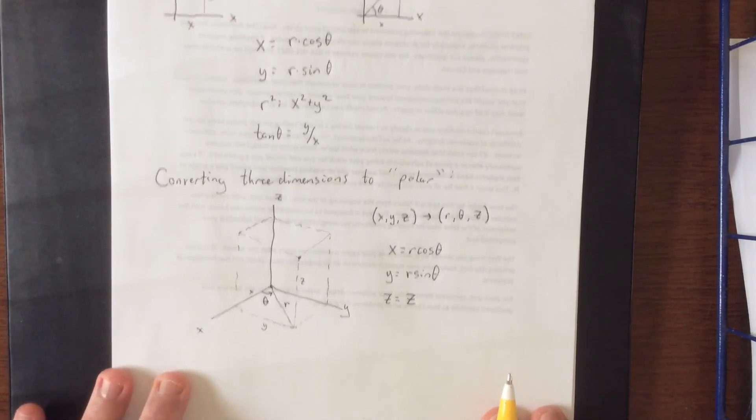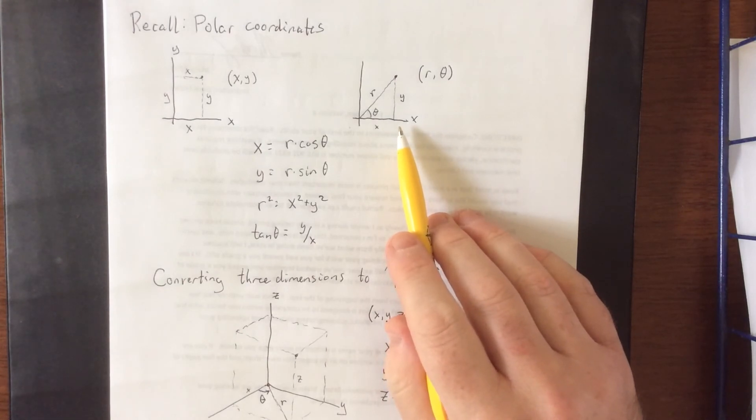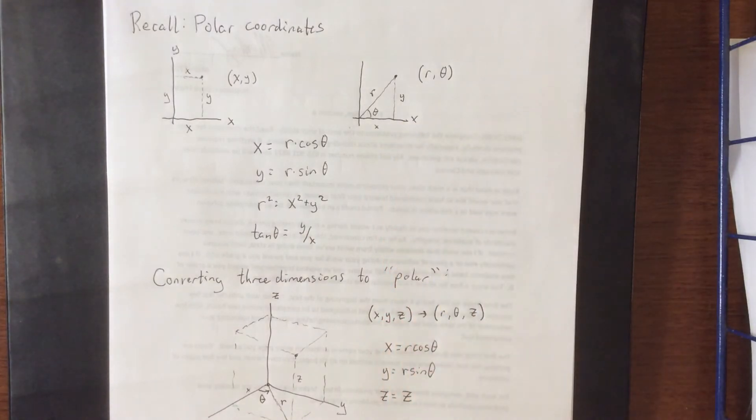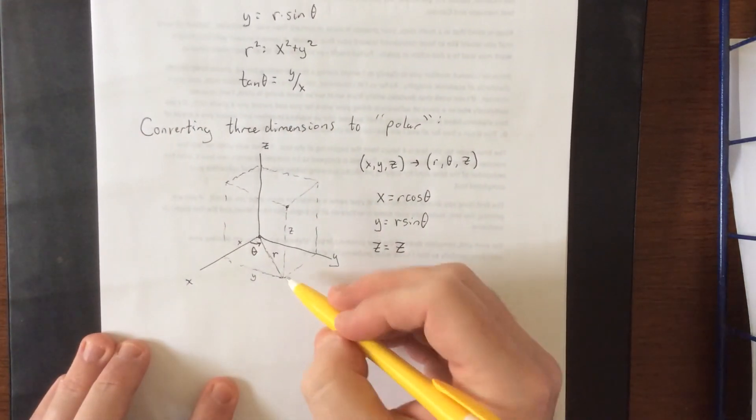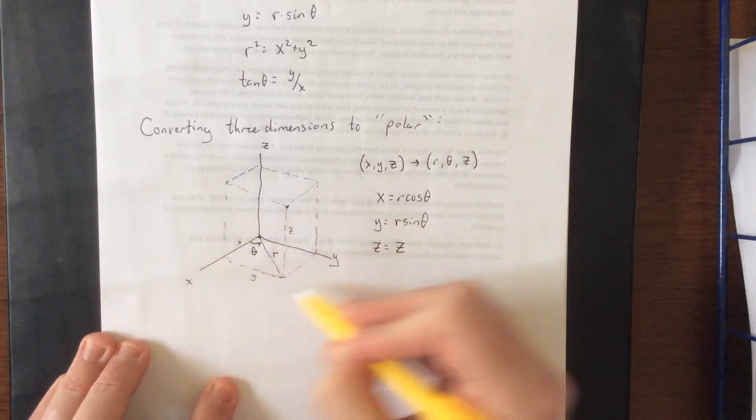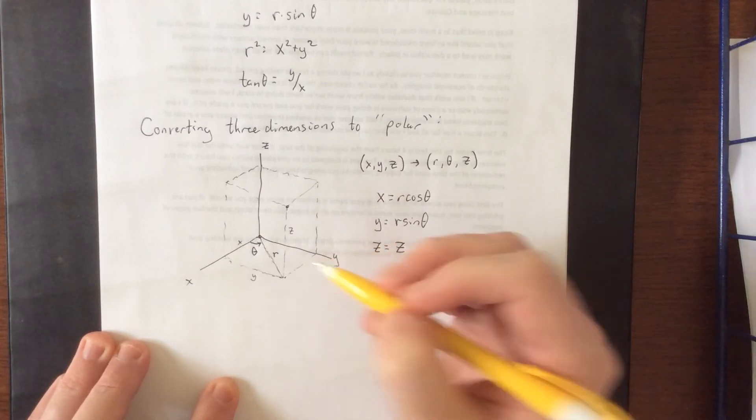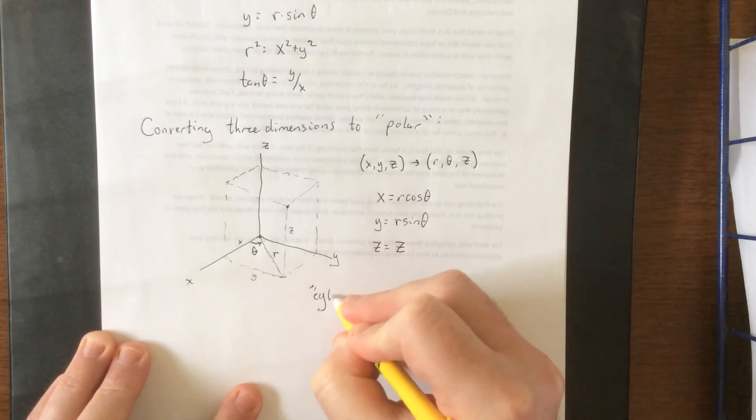Now, one advantage, one big advantage that we got from polar coordinates, is that round things were a lot easier to represent. In fact, r equals a constant was a circle. Now, if we take the concept of a circle and extend it into three dimensions, in the xy plane, we're going to get circles, and in the z direction, we're just going to get straight up and down. Now, what I have just described is, hang on, how do you spell things? There we go.